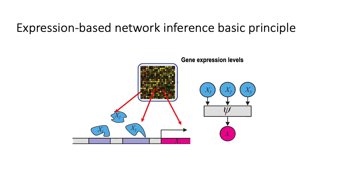To provide context for the use of network component analysis in our algorithm, I'll discuss one of the main assumptions of expression-based network inference. Specifically, the expression of transcription factors like X1, X2, and X3 are used as proxies for the binding of the transcription factor to the binding site. However, the expression is typically not enough to fully capture the relationship between transcription factors and their targets. This is because many important regulatory mechanisms occur after transcription. These include post-translational modification, activation of the transcription factor via phosphorylation, and the accessibility of the transcription factor binding site.